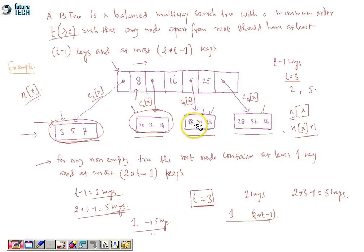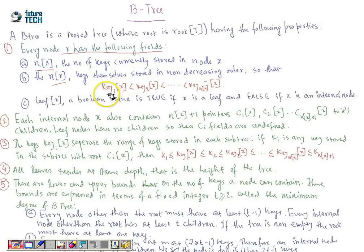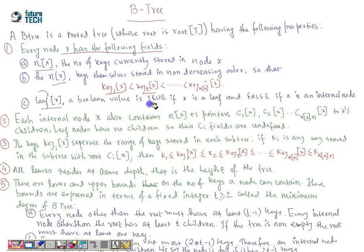The formal definition states that every node x has the following fields: nx — the number of keys currently stored in the node x; the nx keys themselves stored in non-decreasing order, so that key 1 of x is less than key 2 of x and so on; and a leaf-node boolean field for each node indicating whether the node is a leaf or not — if it is a leaf the value is true, otherwise false. Each internal node x also contains nx plus one pointers from c1 through c(nx+1) of x.